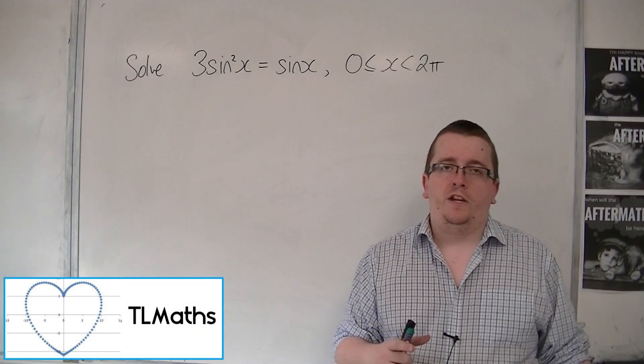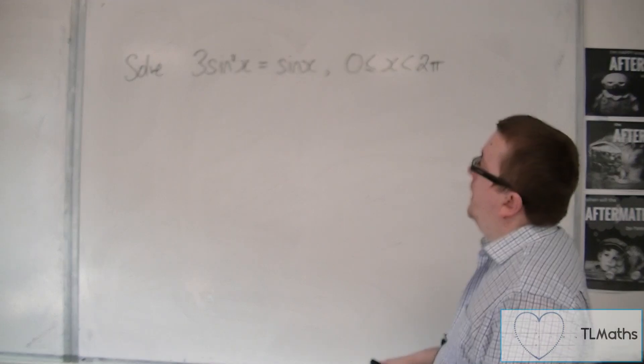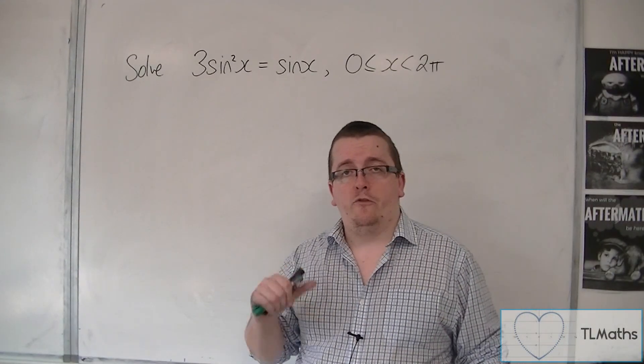So leading on from the previous video, we want to solve 3 sine squared x equals sine x between 0 and 2 pi, so in radians.